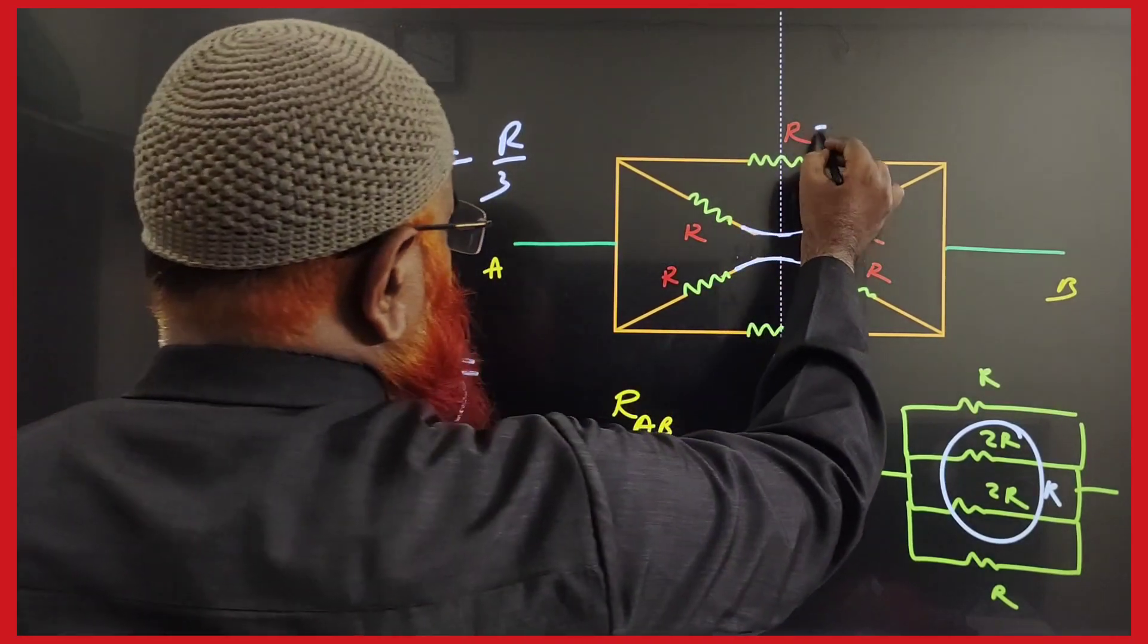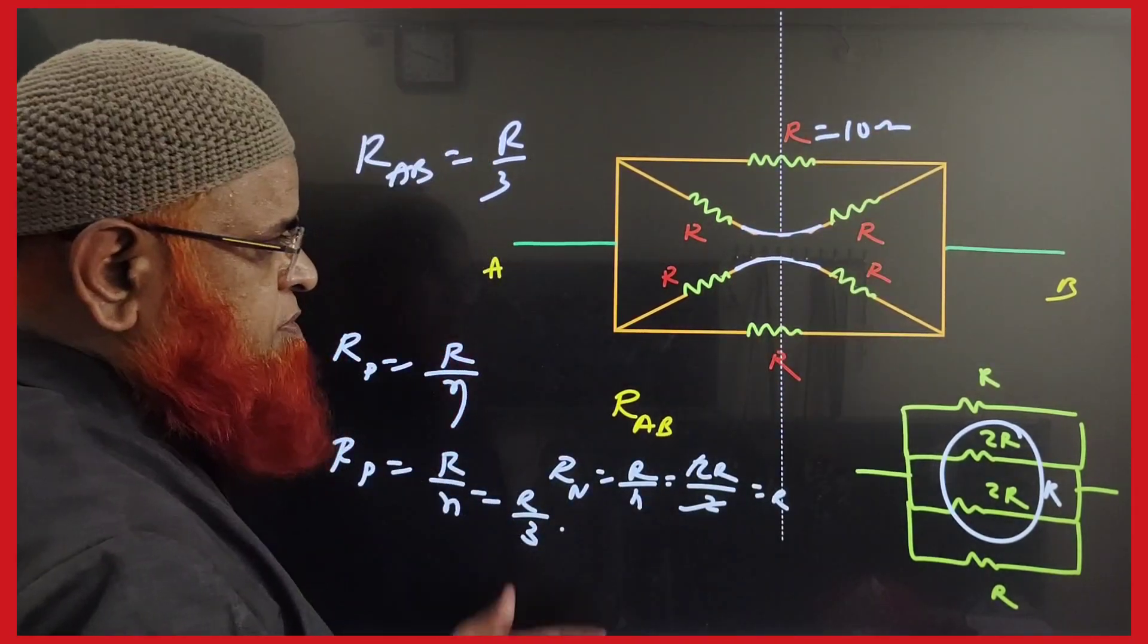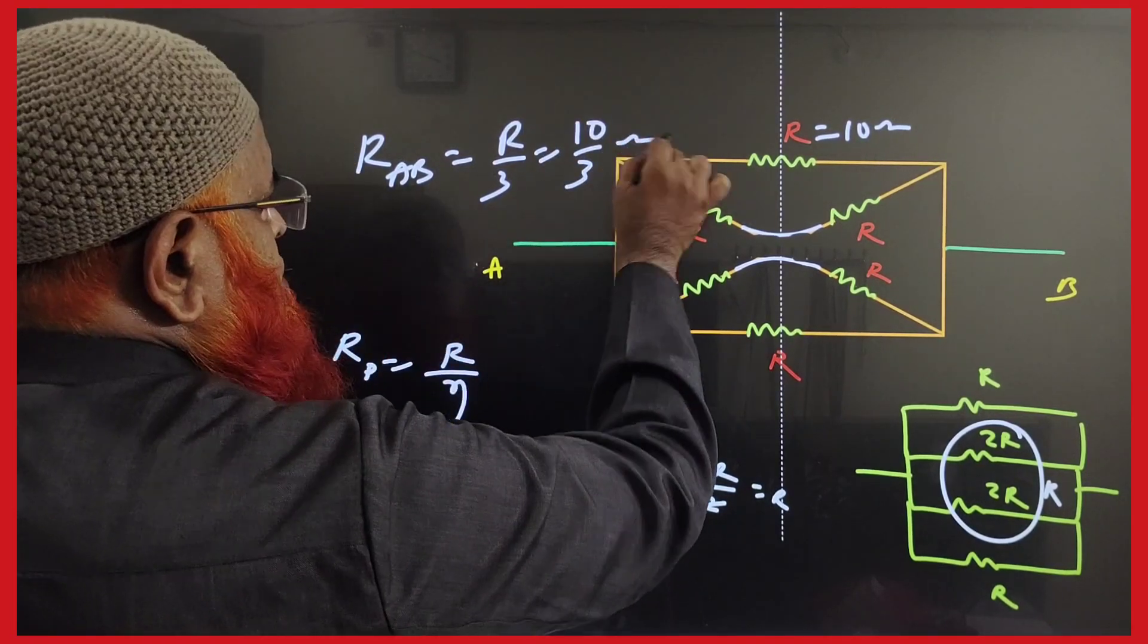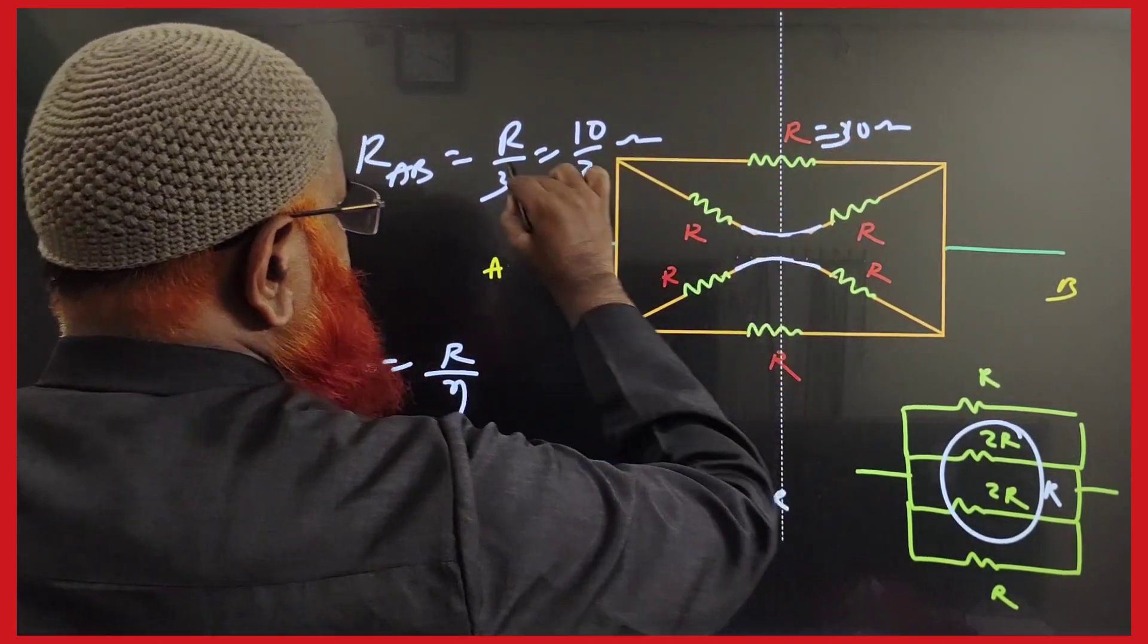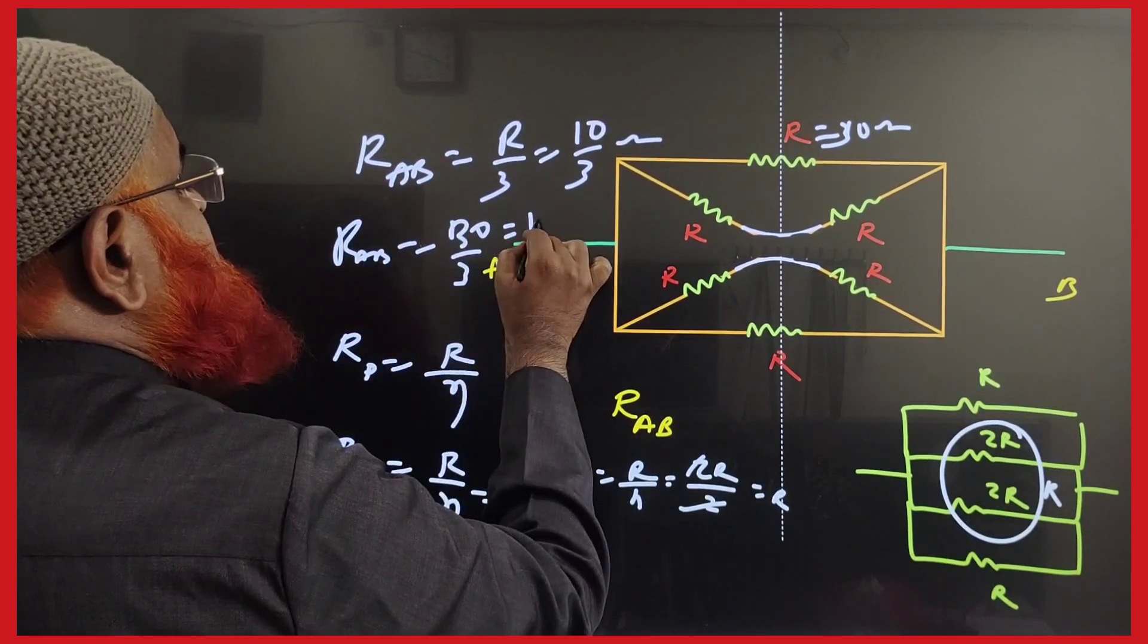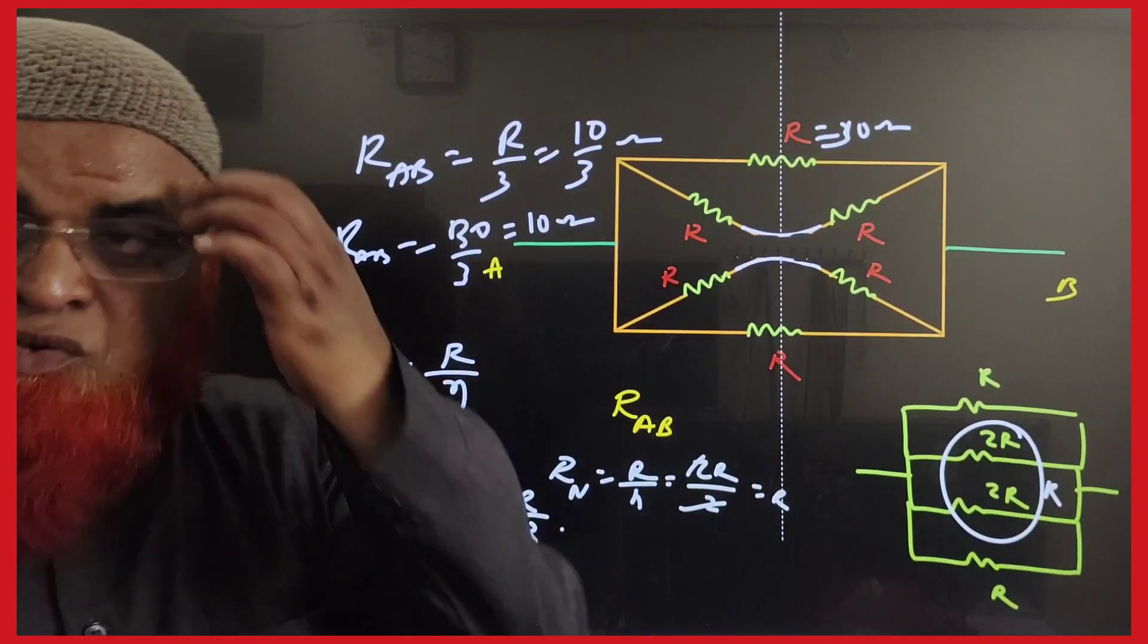For example, if all the resistances are 10 ohms, when this type of circuit is given, your answer is going to be R by 3 ohms. If it is given as 30 ohms, then R across AB is directly 30 by 3, which equals 10 ohms. This is how we solve it.